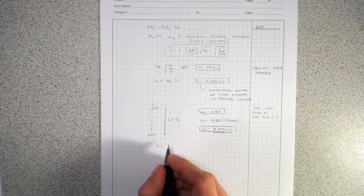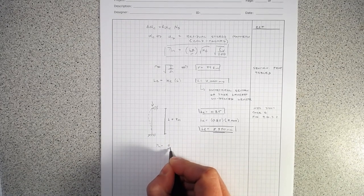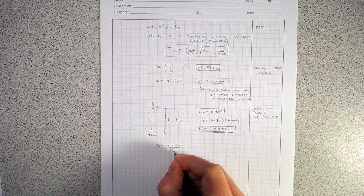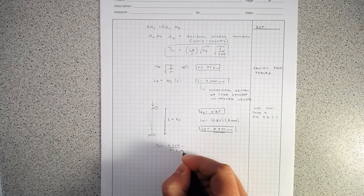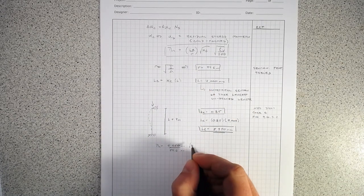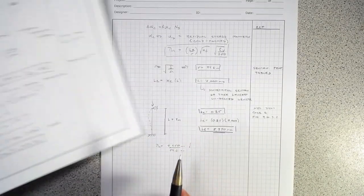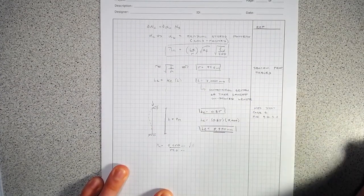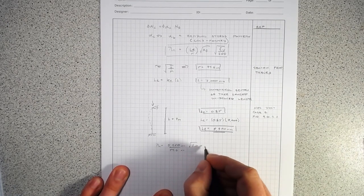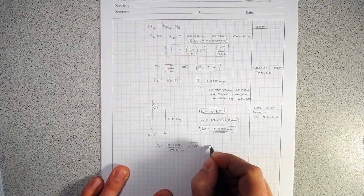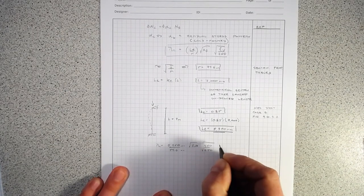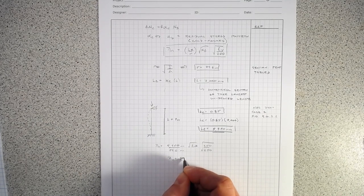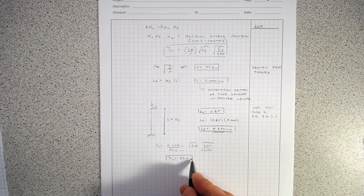Lambda_N equals 5,950 over 74.6, both in millimeters, times K_F of 1.0 times the square root of 350 over 250. Working that out, we get lambda_N equals 94.4 — that's our modified slenderness ratio.